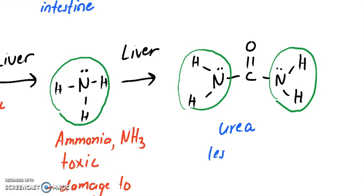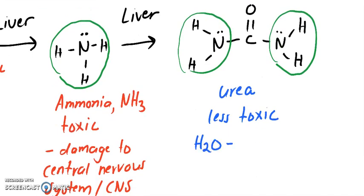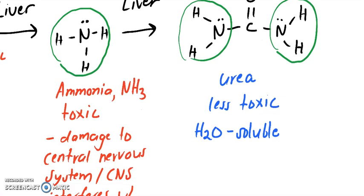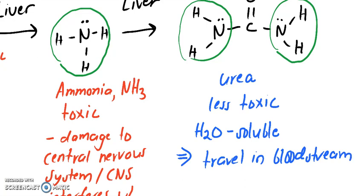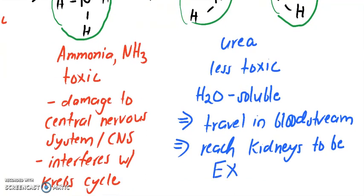Urea is still toxic but not as much as ammonia — it's less toxic and also water soluble. What that means is it can travel in the bloodstream, reach the kidneys, and be excreted. And that's today's topic: the kidneys.